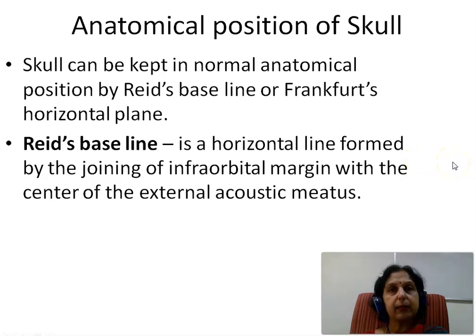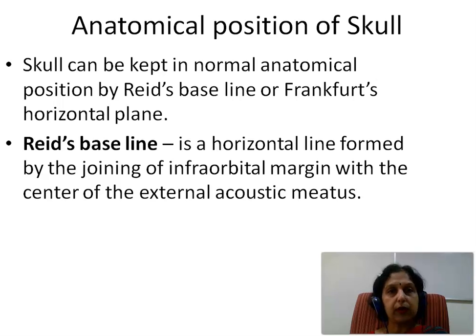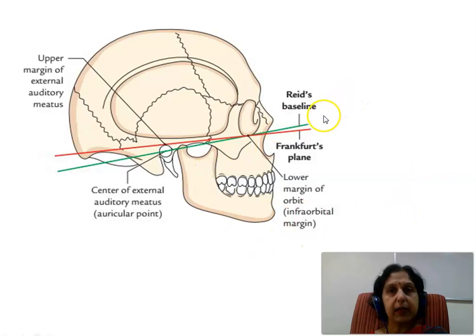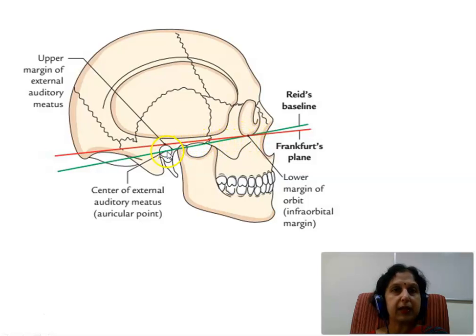Now let us see the anatomical position of the skull bone. The skull can be kept in normal anatomical position with the help of the Rietz baseline or the Frankfurt's horizontal plane. The Rietz baseline is a horizontal line formed by joining the infraorbital margin with the center of the external acoustic meatus. This diagram shows us the Rietz baseline — the green colored line which extends from the infraorbital margin anteriorly and posteriorly passes through the center of the external auditory meatus.